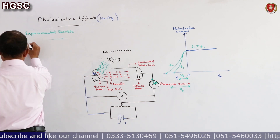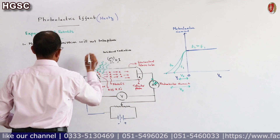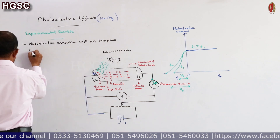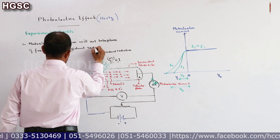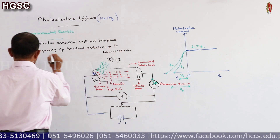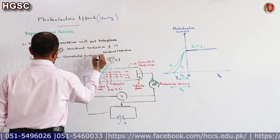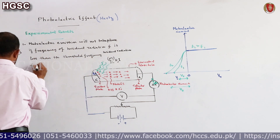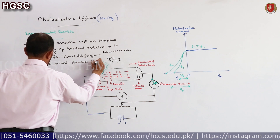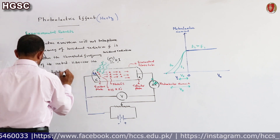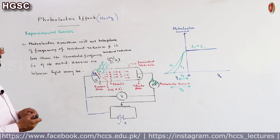First result: photoelectric emission will not take place if the frequency of incident radiation F is less than the threshold frequency F0 of the metal, however intense the light may be. Photoelectric emission will not take place.